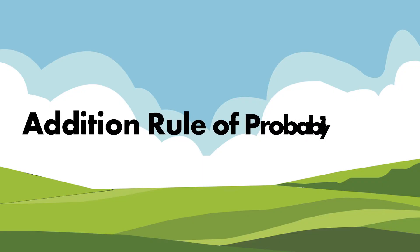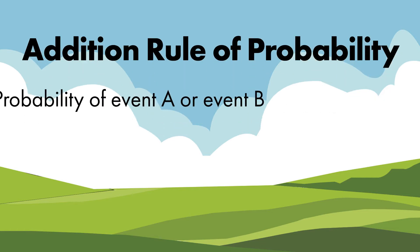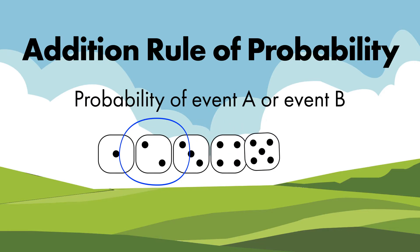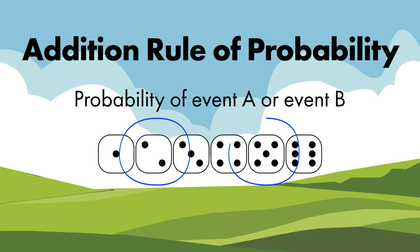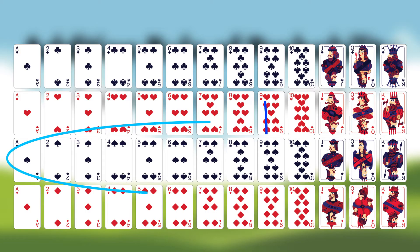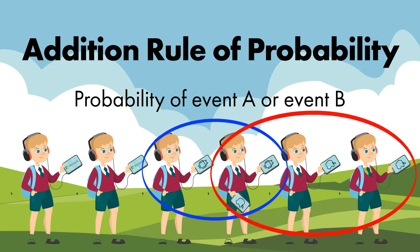To answer these questions, we can use the addition rule of probability. It can be used when we're interested in at least one of multiple criteria being true — the probability of A or B. For example: rolling a two or a five, drawing an eight or a spade, or having an Android phone or an iPhone.